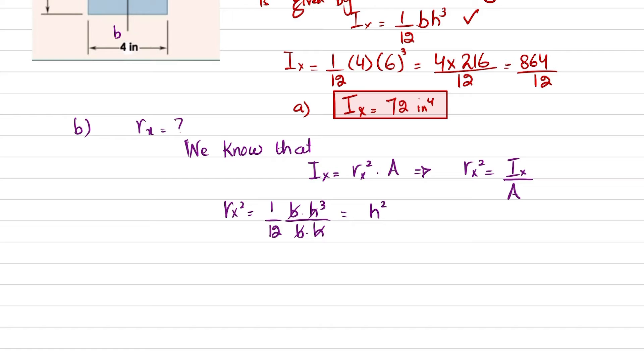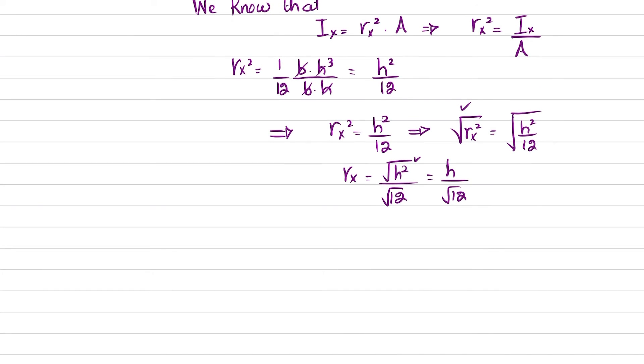So we will put the value b into h. You can see b will cancel with this and h will cancel with this, so it will be h squared over twelve. If you further simplify, rx squared is equal to h squared over twelve. From here if you take the square root on both sides, rx will be equal to h over square root of twelve.